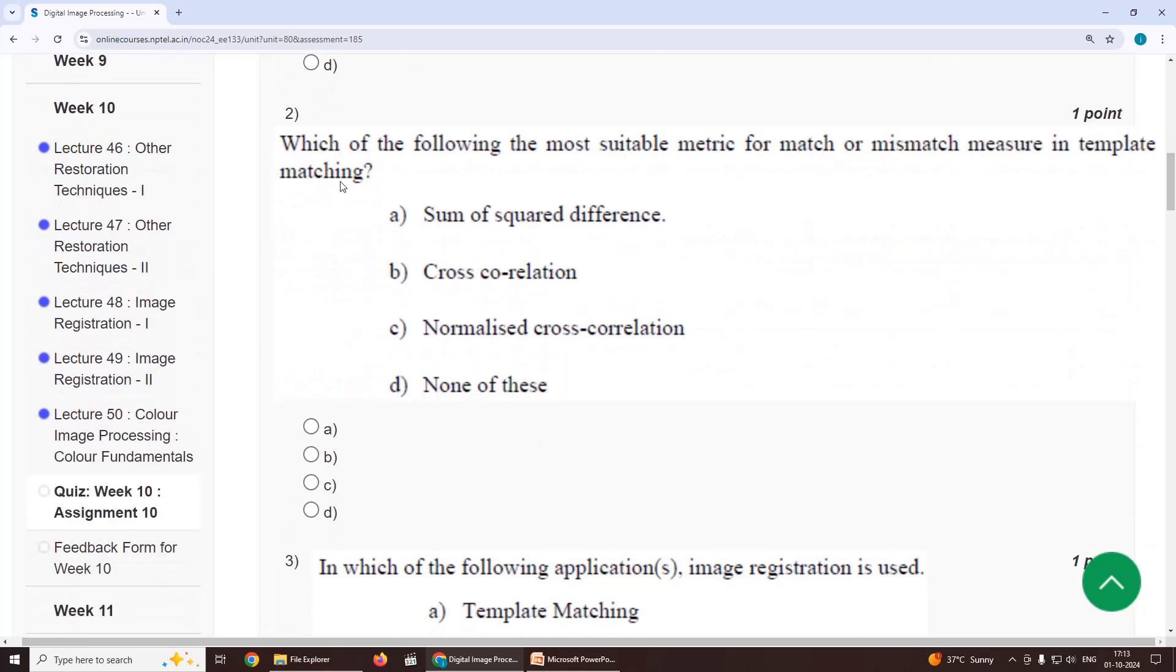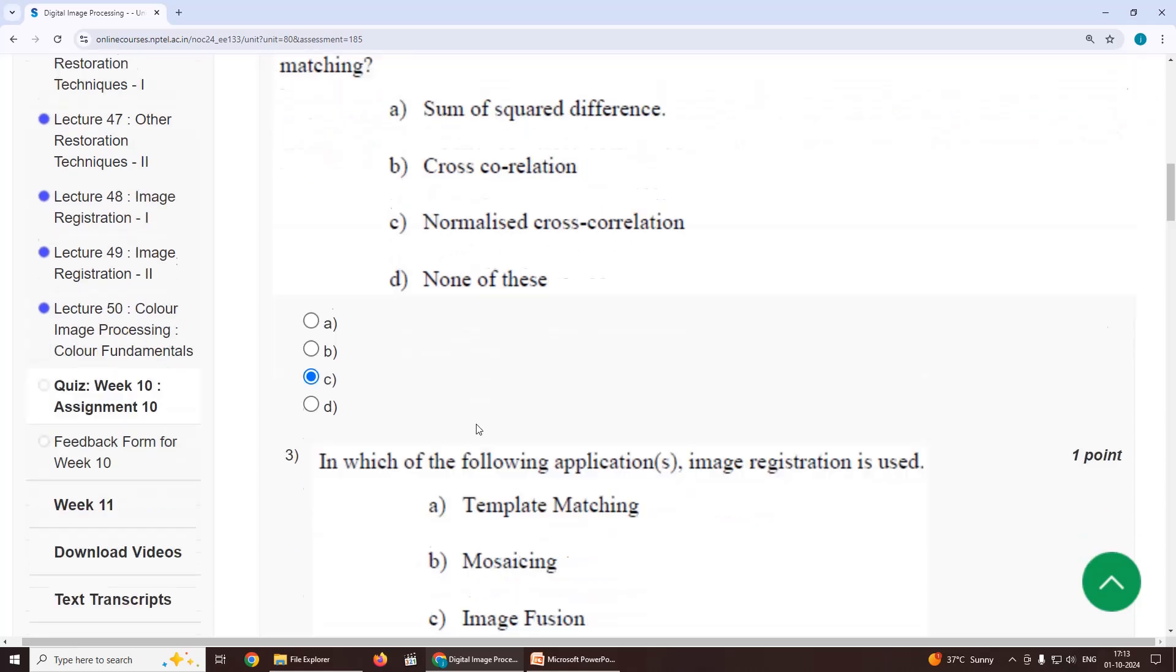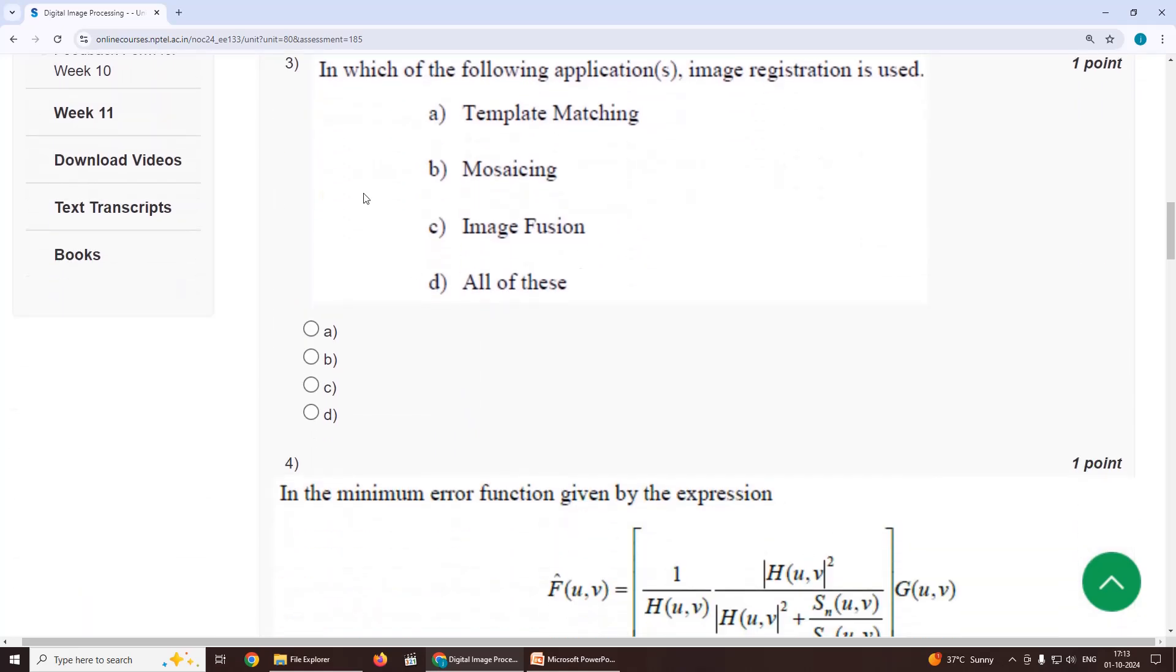Second question, which of the following is the most suitable metric for match and mismatch measure in template matching? Our suggestion is option C, normalized cross-correlation. Third one,